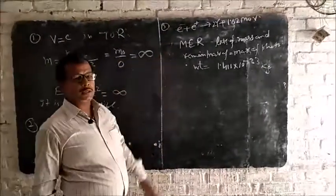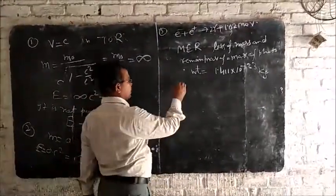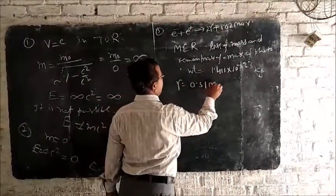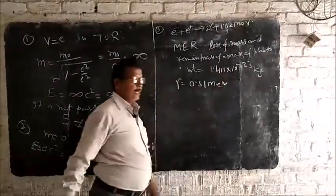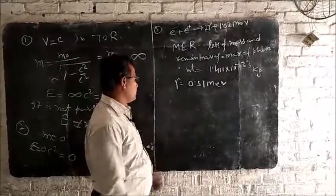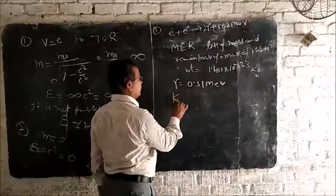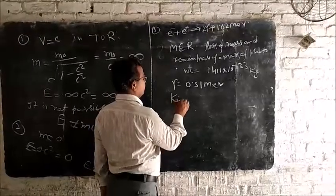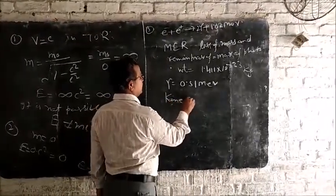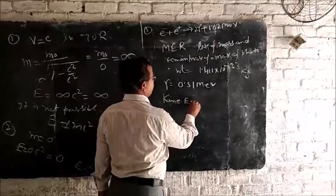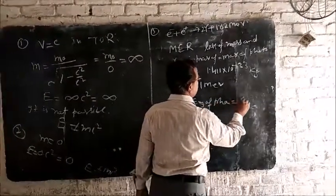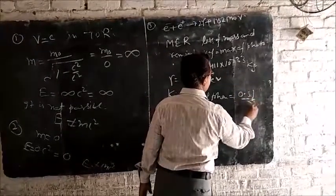Taken, the produced energy for each electron is 0.51 mega electron volt. Among this energy, only half energy used as a kinetic energy of photon. That is kinetic energy of photon is 0.51 by 2.